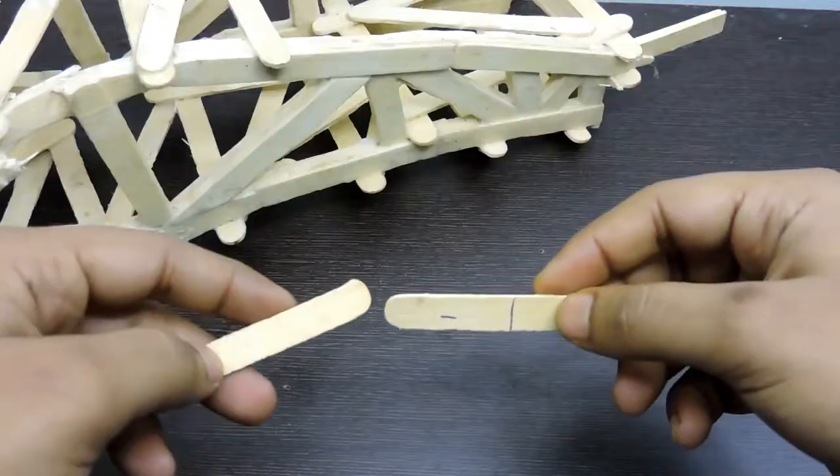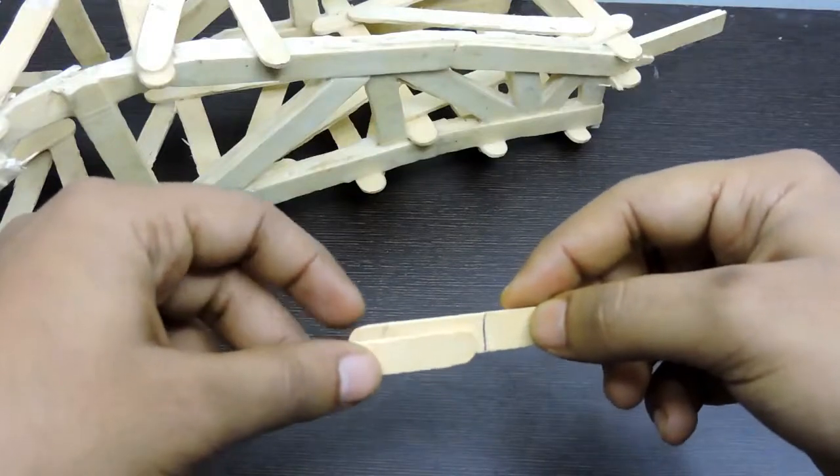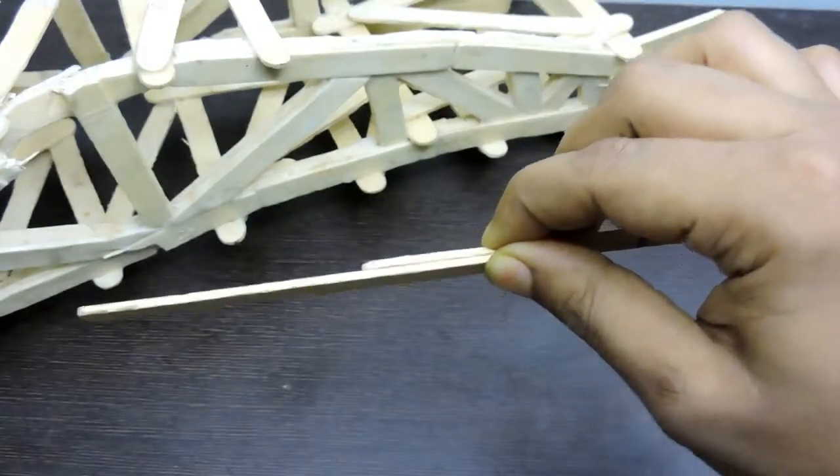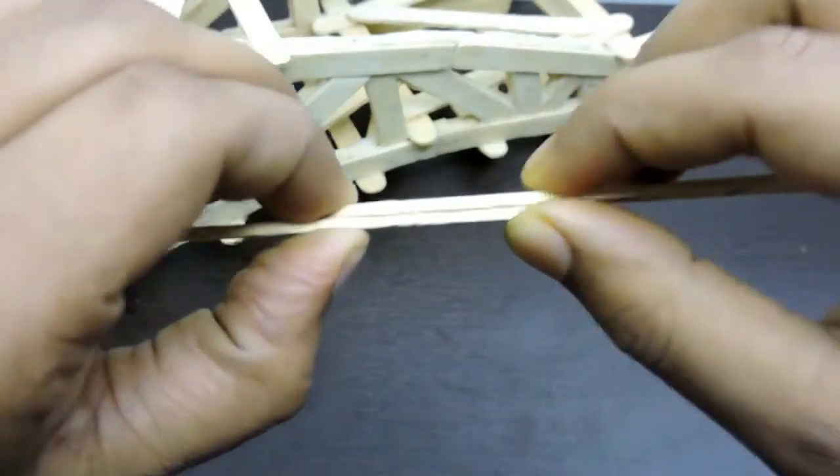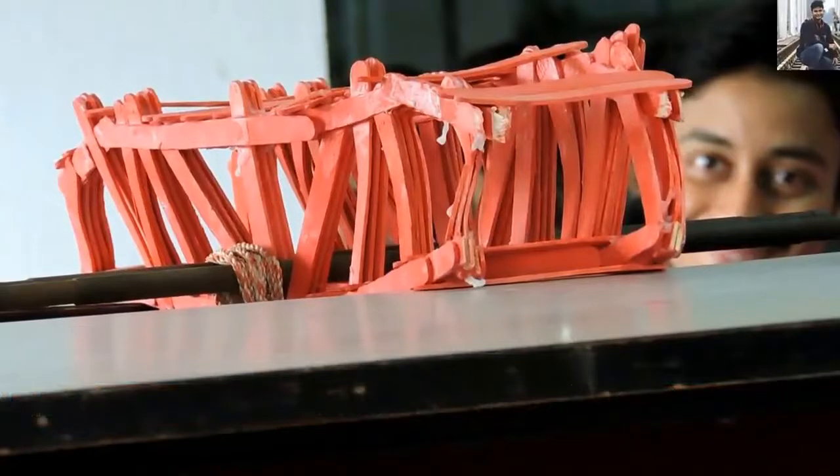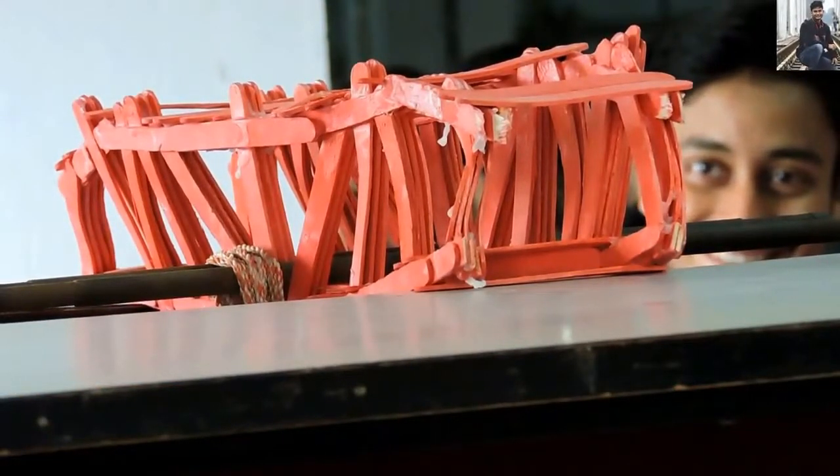Number three: if you have to stick one popsicle stick with another popsicle stick, then stick at minimum one-third portion of the popsicle stick with another. Number four: don't use extra sticks in the bridge structure.